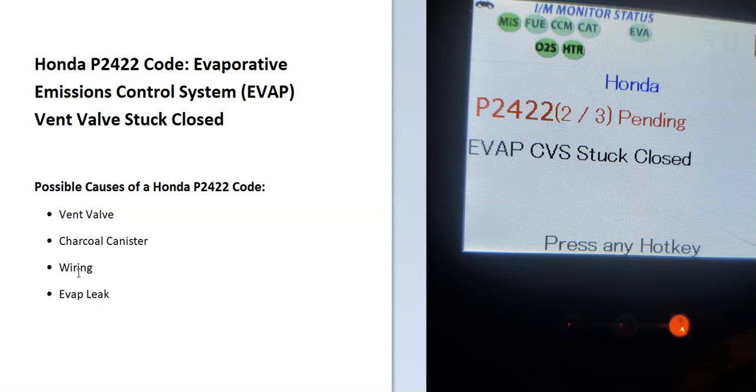What does this mean? Hondas have an EVAP system built into them for emissions. It takes the gas vapors from the gas tank and sends them back into the engine to get burnt off so they don't escape into the atmosphere. The onboard computer has seen a problem with this system.